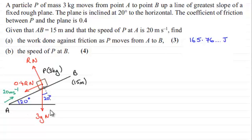What we had and what I drew for part A was this diagram, which was about a particle P of mass 3 kg. It moved from this point A to this point B up the line of greatest slope of a fixed rough plane. And the plane was inclined at 20 degrees to the horizontal and the coefficient of friction between P and the plane was 0.4.